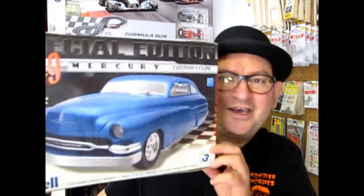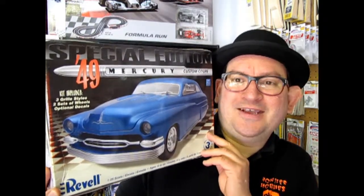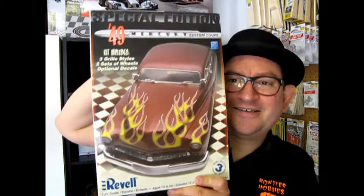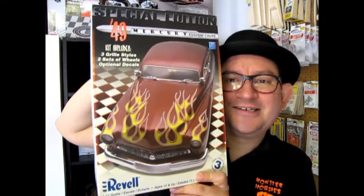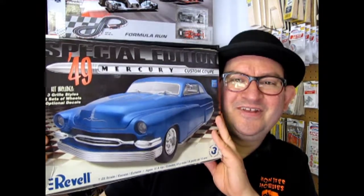Tonight we're going to look at Revell's Custom 1949 Mercury Kit. Now wait a minute, you're saying, hey, he held up a different box at the beginning of this. Well, there it is. Yes, double-sided so you can stack it tall on the shelf or cross on the shelf. But either way, the same model is inside the box, so let's go down and open the lid on this baby.